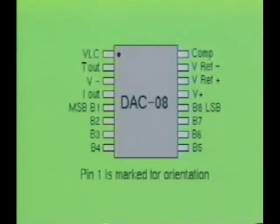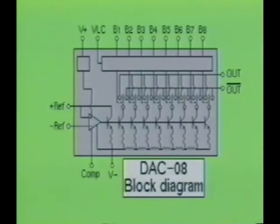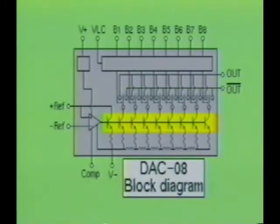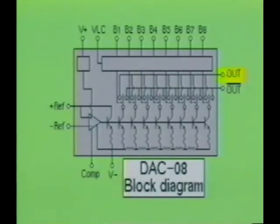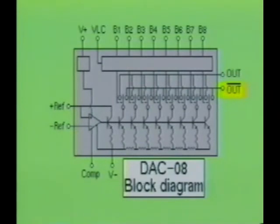Here you see the DAC-08 integrated circuit. It is an 8-bit current output digital-to-analog converter IC. Internally, this device contains the R2R ladder network, electronic switching devices, current sources, and a reference amplifier. Notice there are two current output terminals — one is the true output and one is the complemented output. The true output will increase from zero to full scale as the input increases from hexadecimal 00 to hexadecimal FF, and the complemented output will decrease from full scale to zero as the digital inputs increment over the same range.